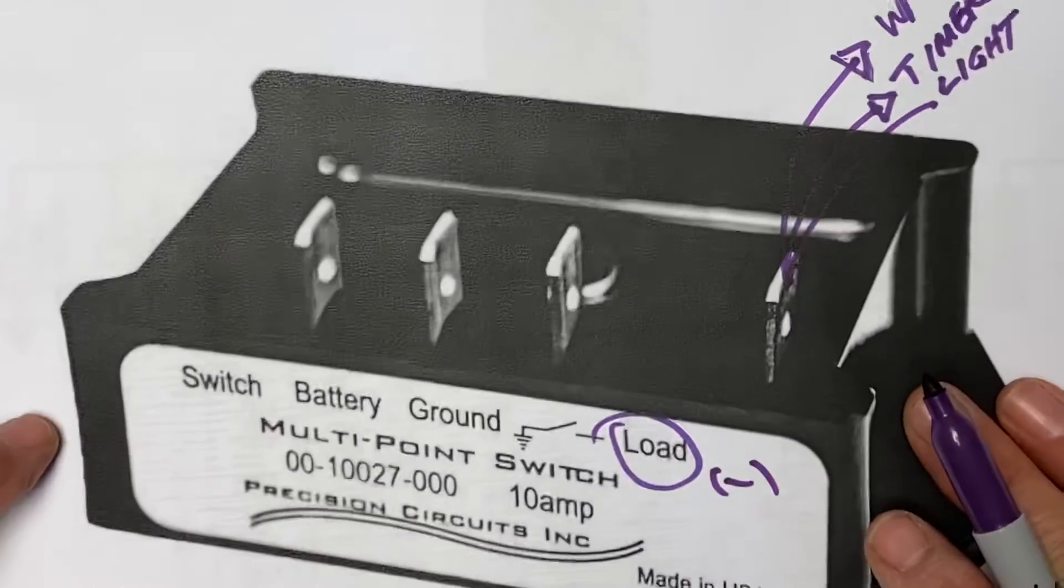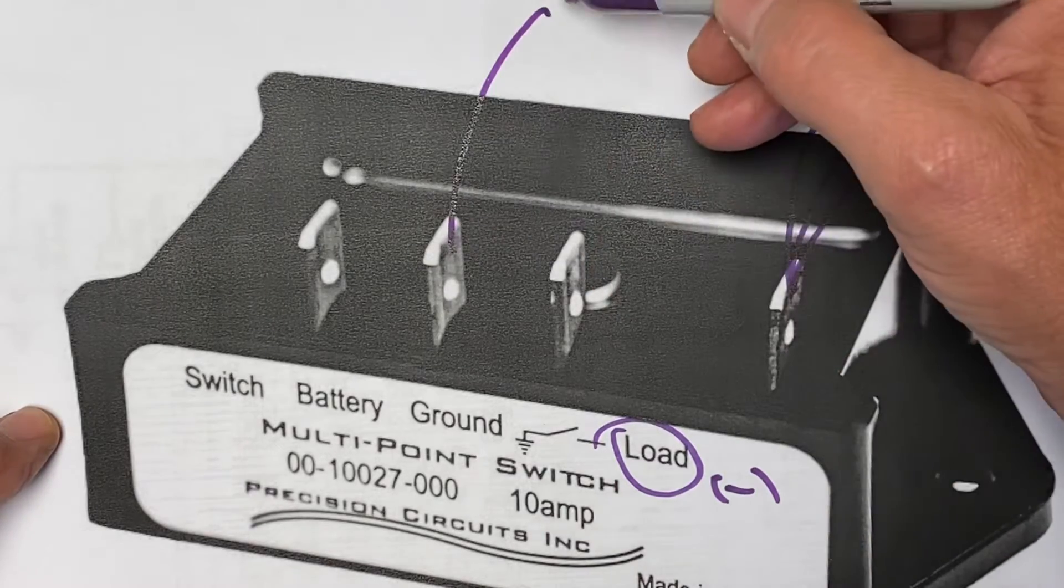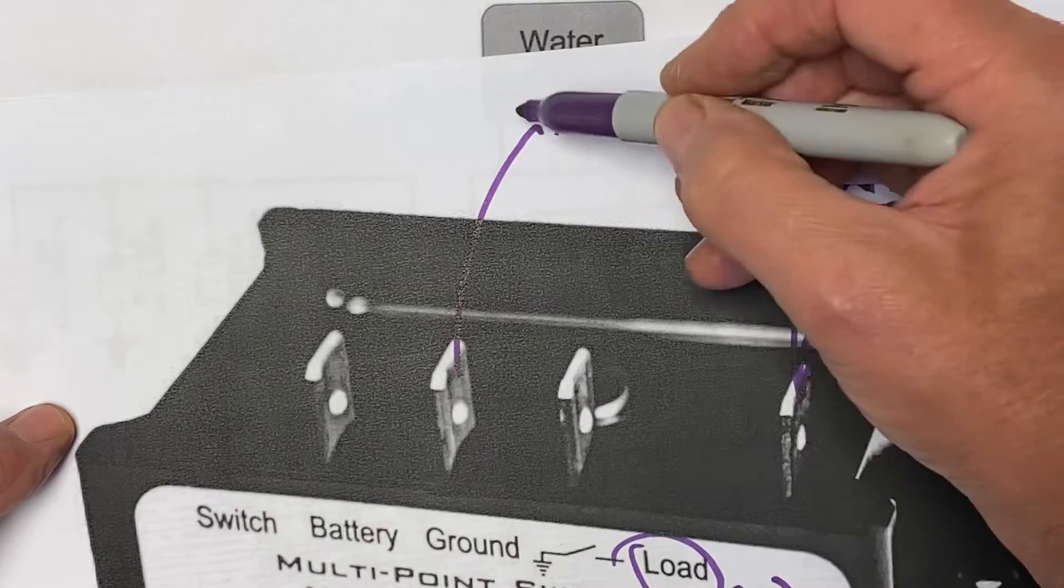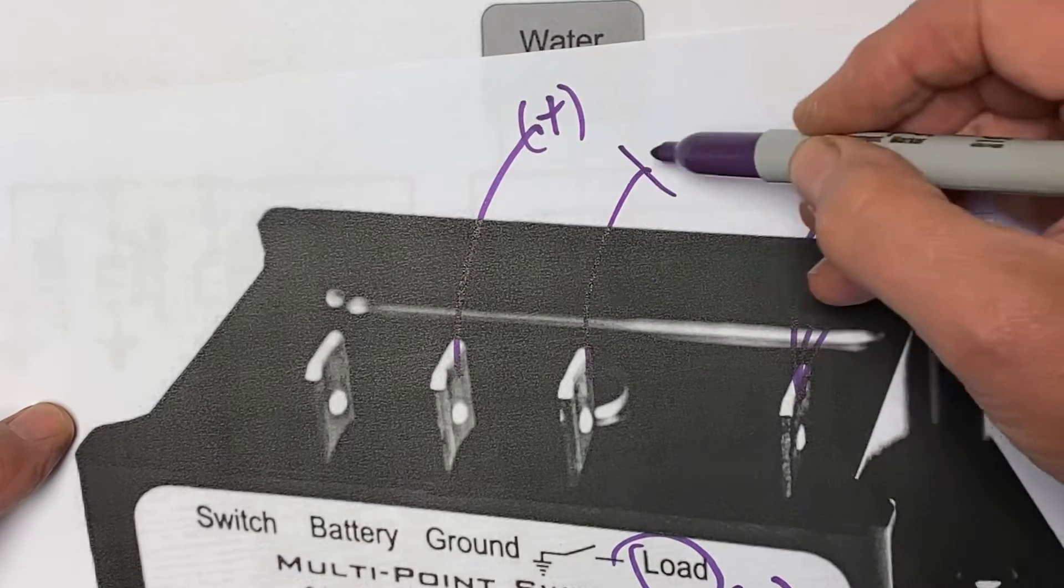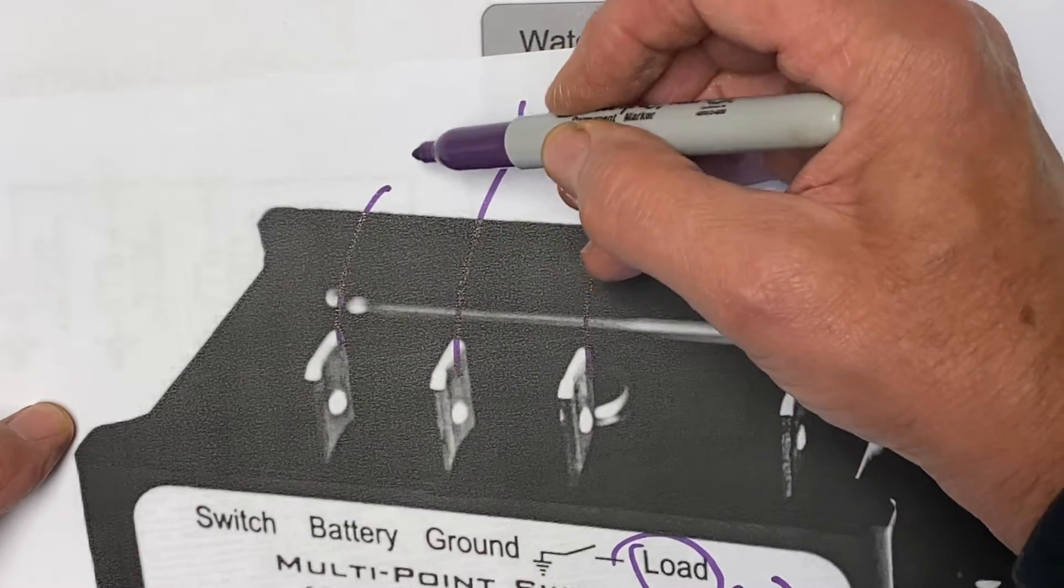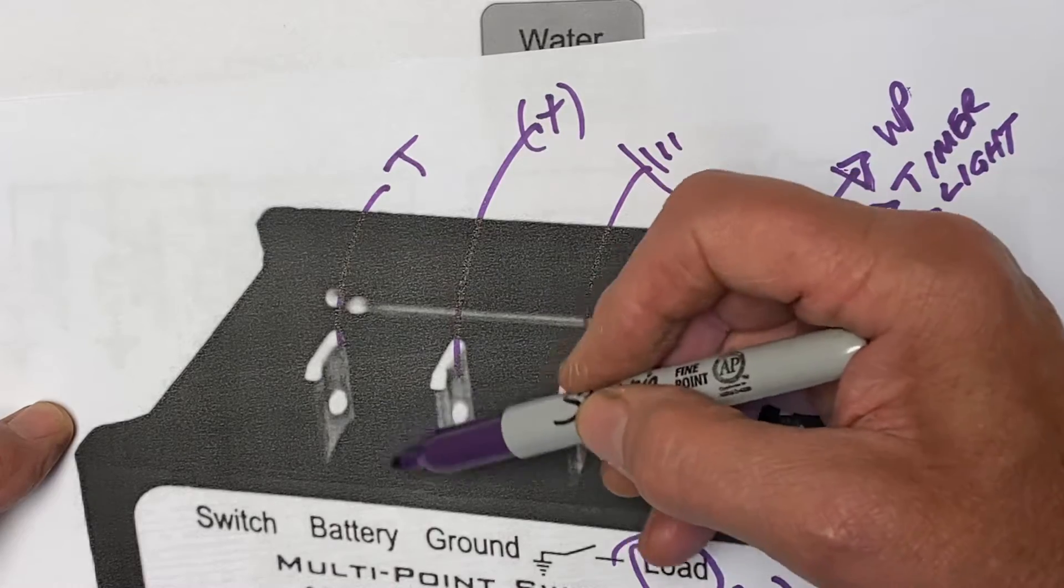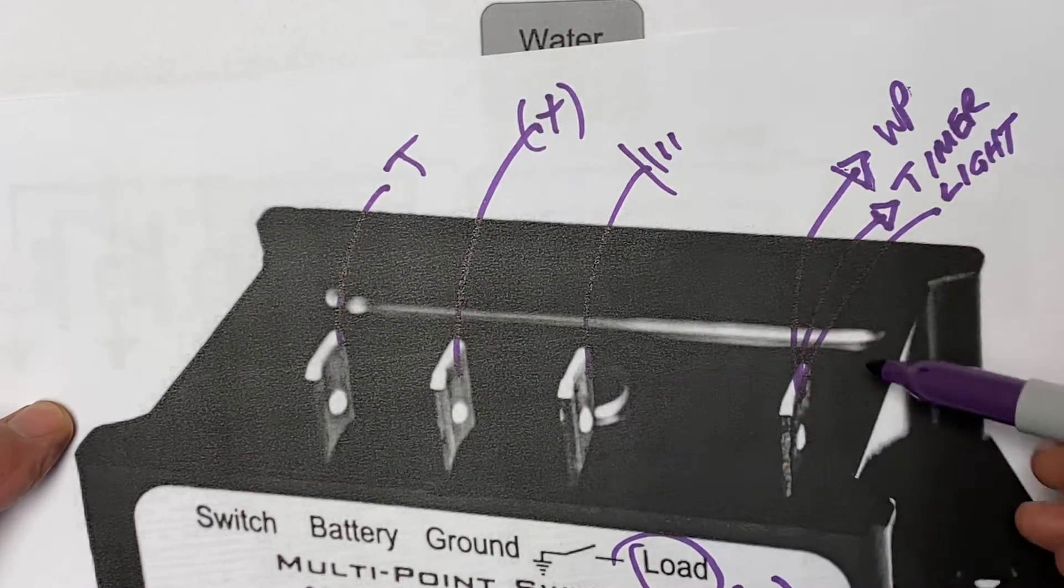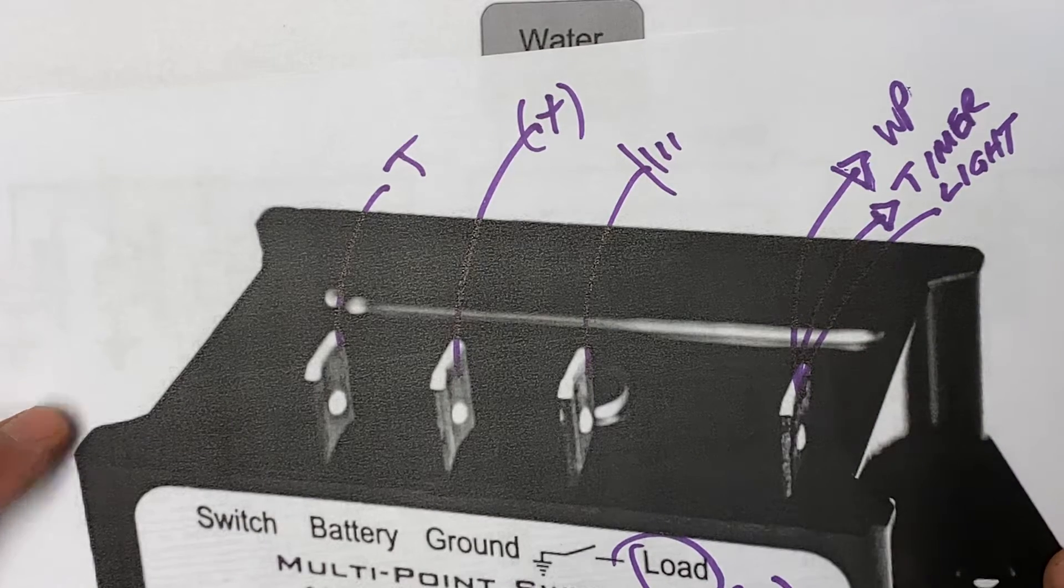How this particular latching relay works is it's connected to battery. It's connected to ground. And then there's a switch or a trigger. And all this trigger does is it allows this relay to close the circuit between the ground and the load. Okay? That's how this works.